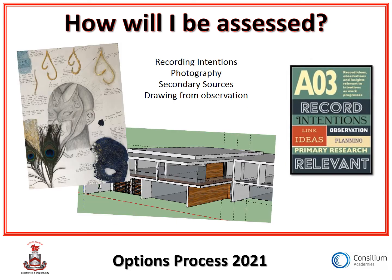Assessment objective three is all about recording your intention. We're looking at how you record through drawing, through photographs, your choice of secondary sources and how you use those, and also through observation. This could be linking our ideas back to our artists that we looked at in AO1, and also starting to plan and investigate for our final outcome.